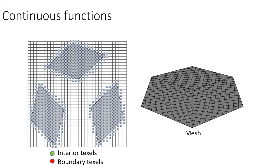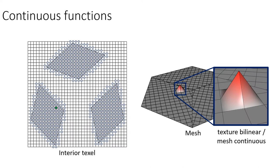The texels include those interior to the charts and those around the boundary. For interior texels, we use the bilinear hat functions used by graphics hardware for rasterization, as these define continuous functions on the mesh.